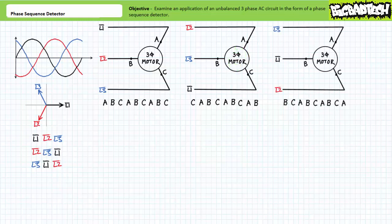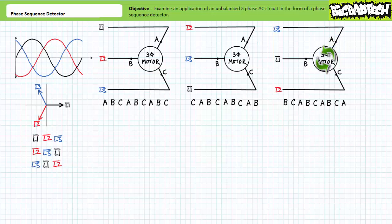Similarly, if phase L2 gets off the bus and L3 and L1 each move forward one seat, and L2 gets back on the bus and takes a seat in the rear, again not much has changed regarding the sequence — only the starting point within the same sequence. As L1 voltage peaks it establishes a magnetic pole at terminal B, then as L2 voltage peaks at terminal C, then as L3 voltage peaks at terminal A. The process repeats itself, BCA, BCA, again establishing counterclockwise rotation.